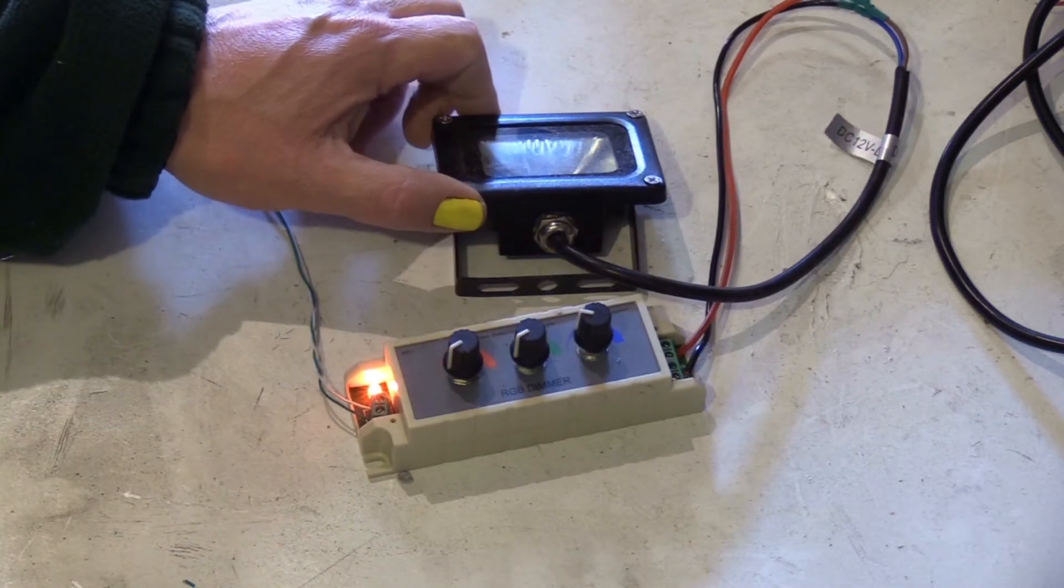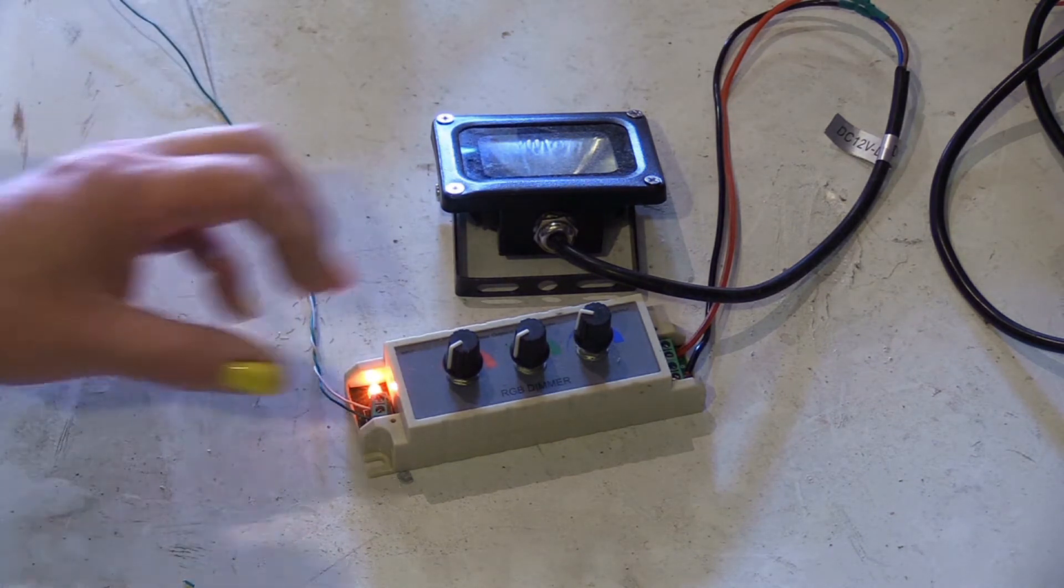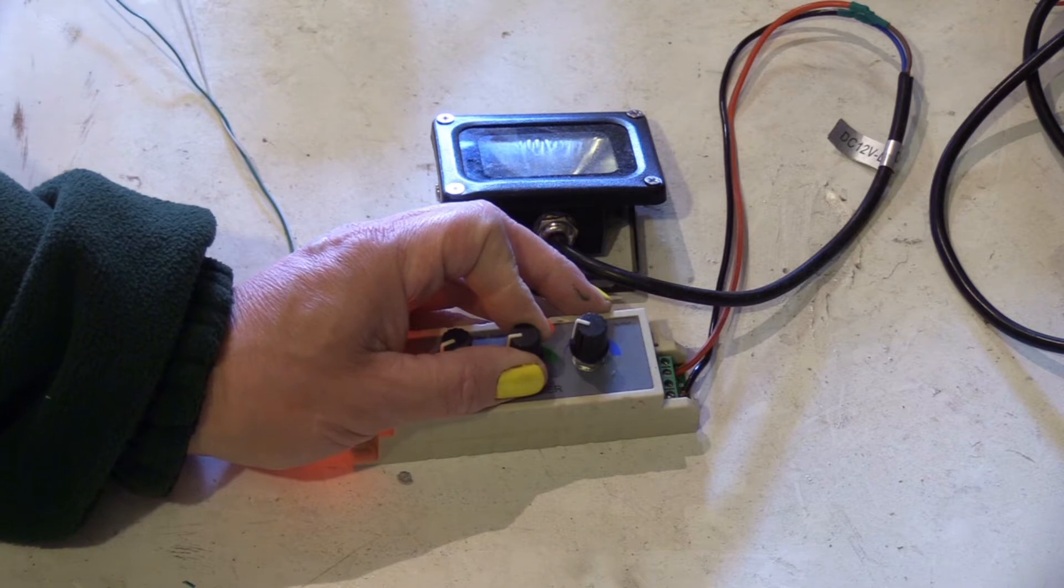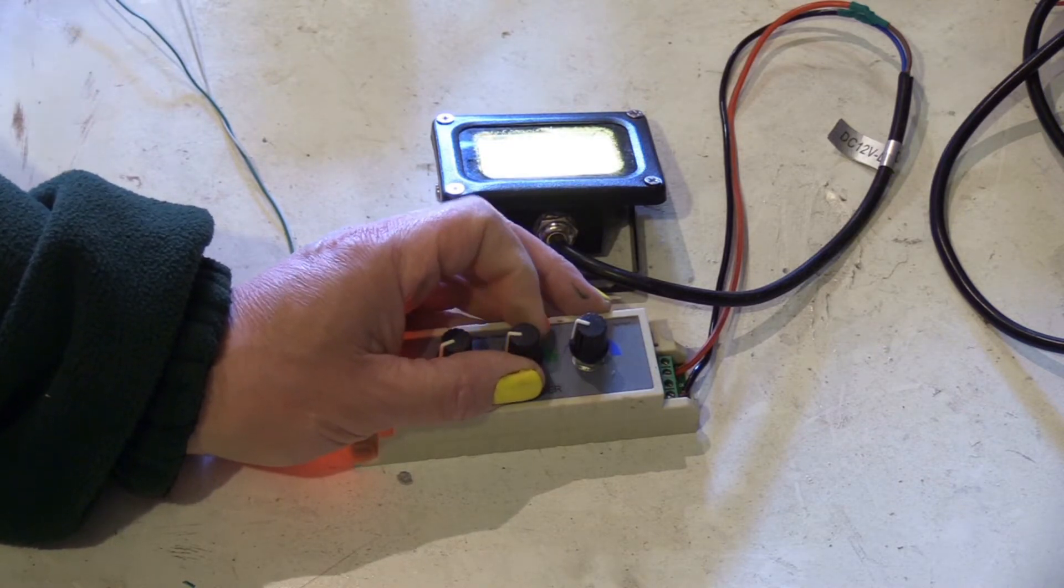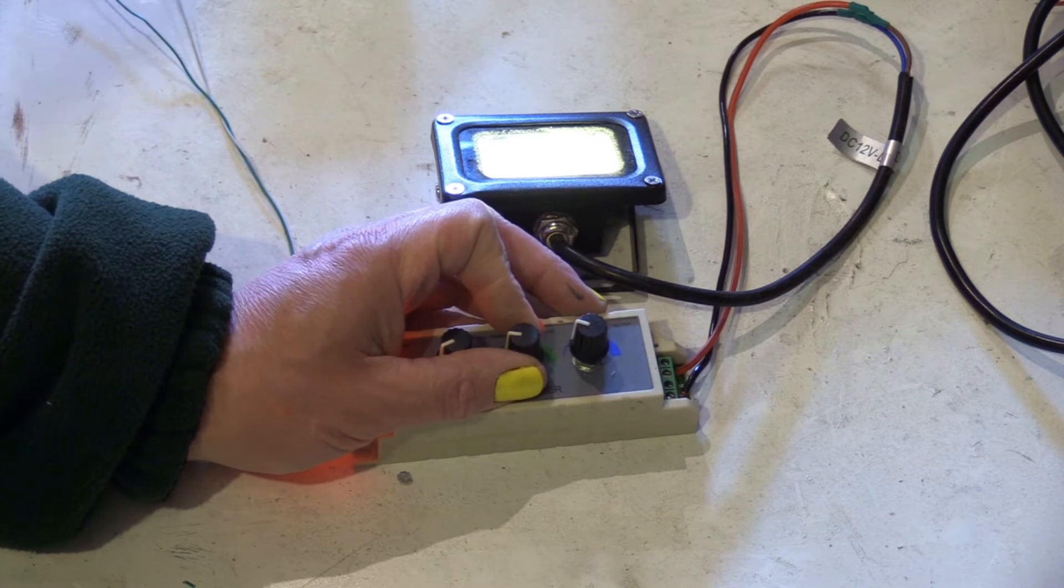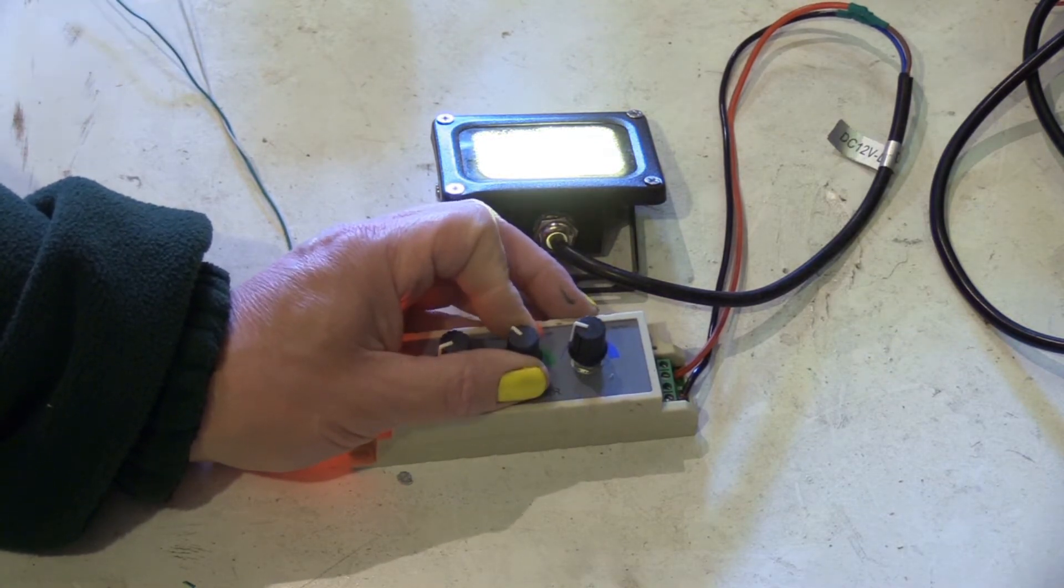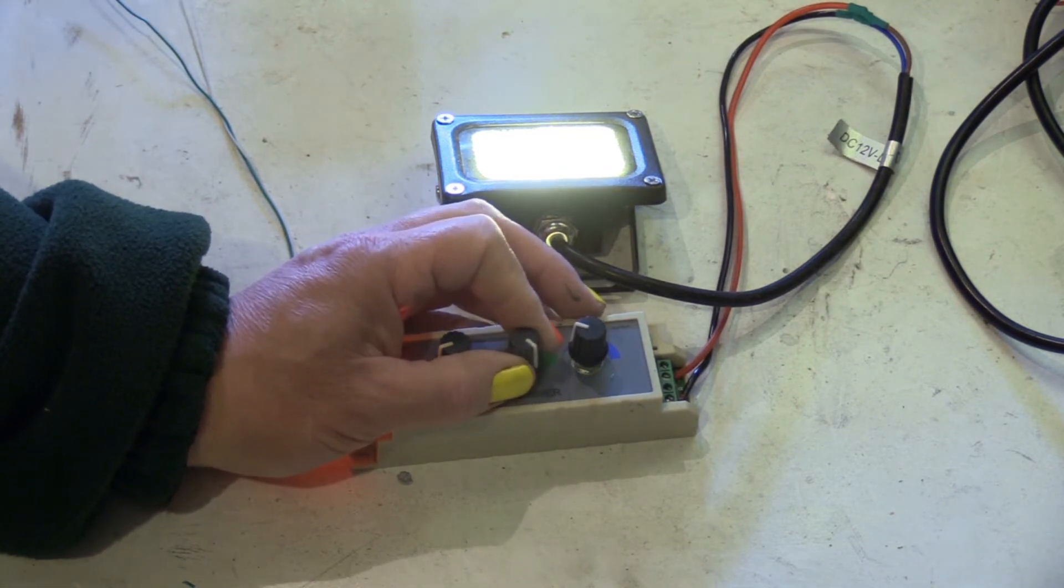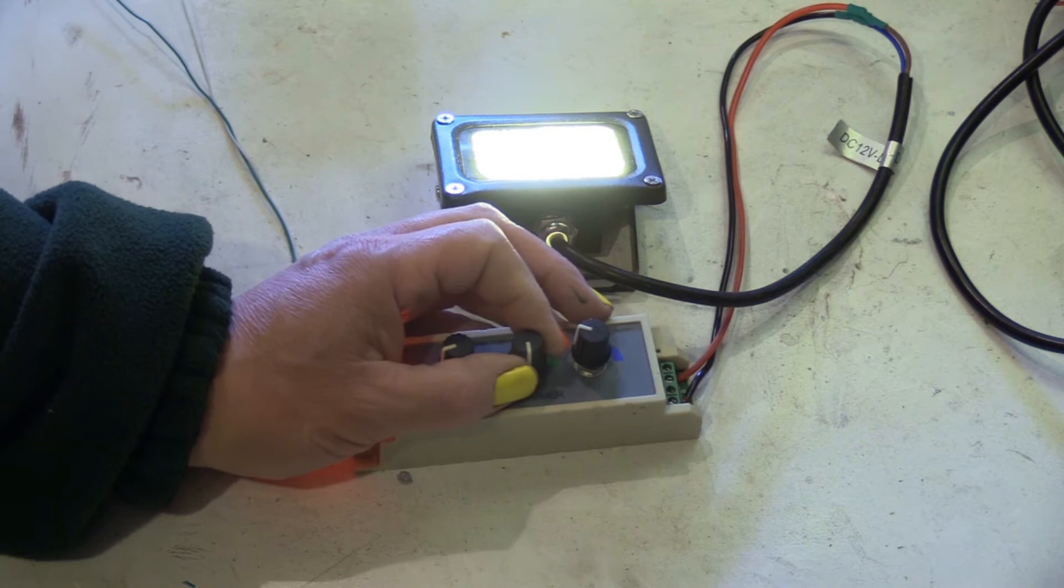I'm pointing away from the camera to save it blinding you. Watch this, it's 12 volts as I say. Turn it on, the LEDs come on. But I can also brighten them, though it could be argued I'm actually dimming it.